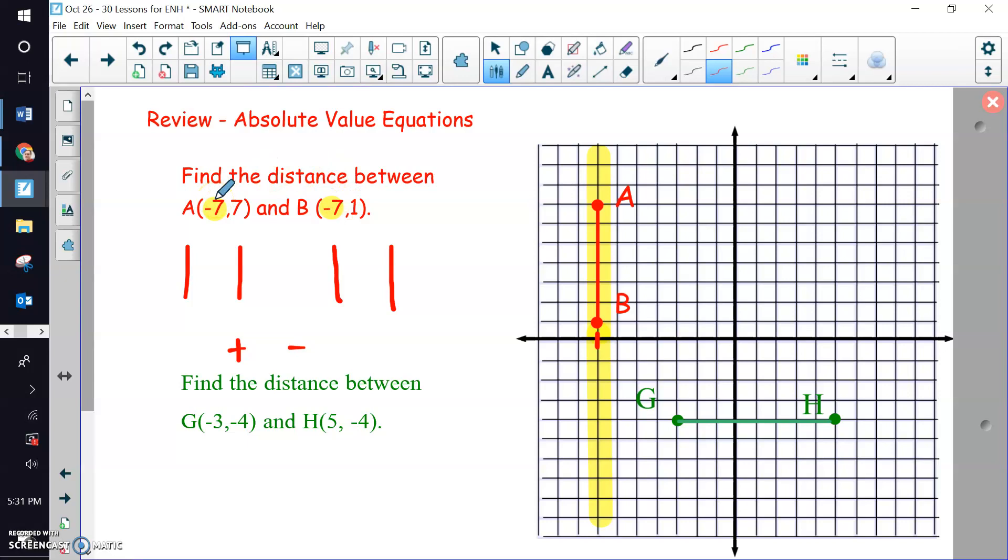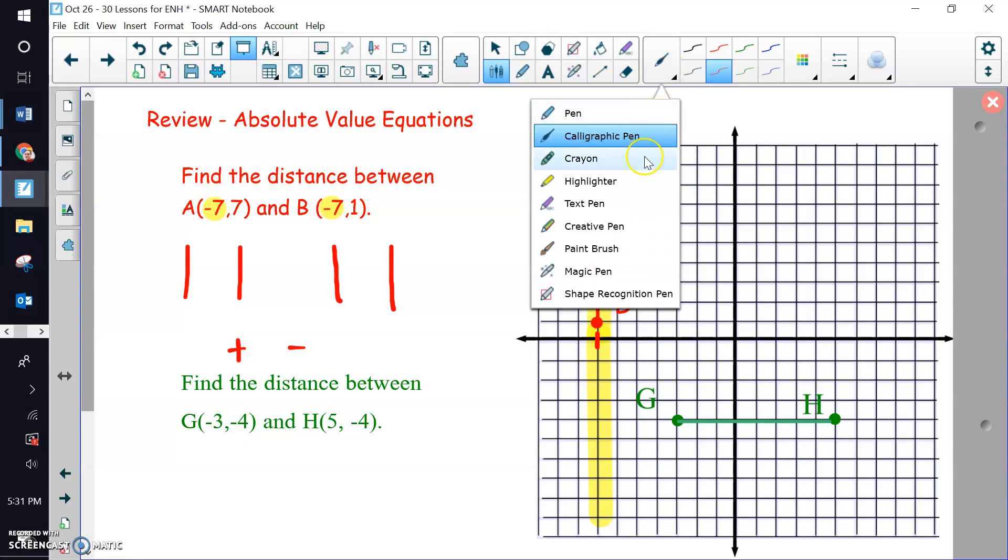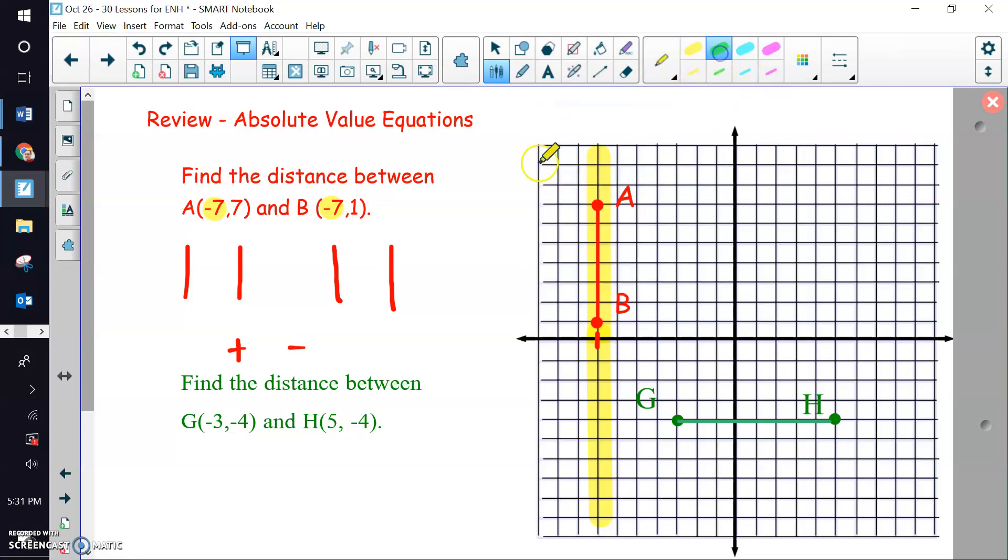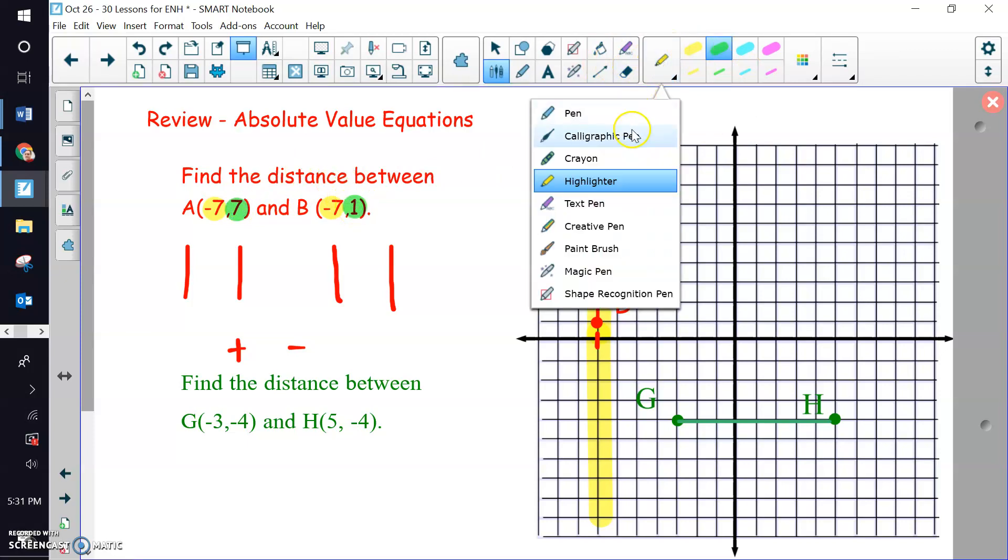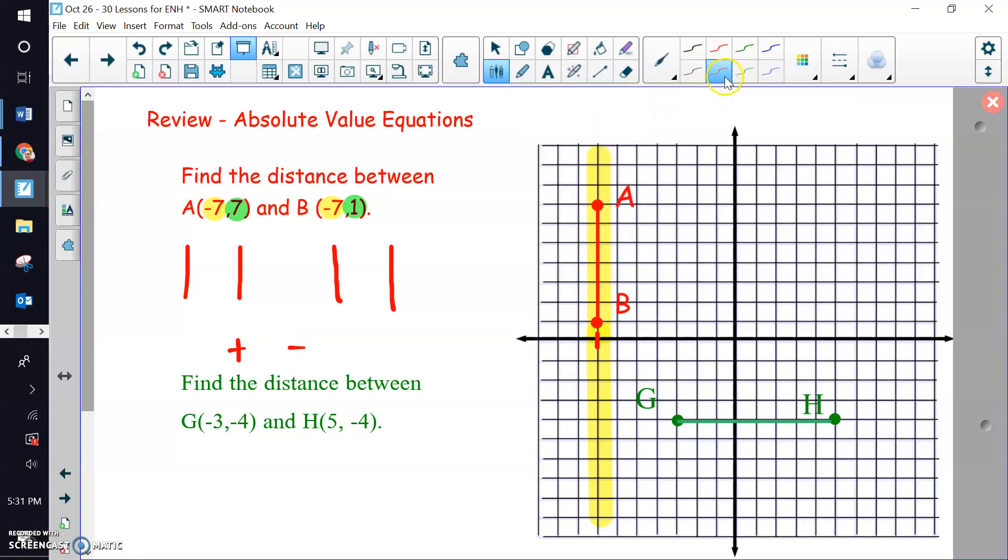So we don't want to use the numbers that are the same. We want to use the two values that are different. And in this case, positive 7 and positive 1. So those two are the points, the two y-coordinates. So here's like positive 7. That's where that point is on the y-axis. And then a positive 1 along the y-axis are those two points.